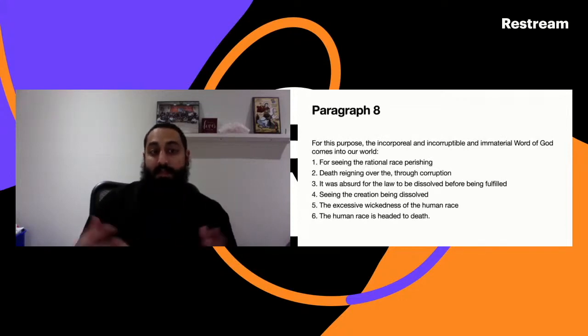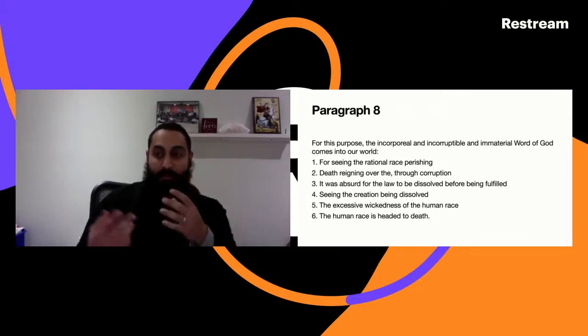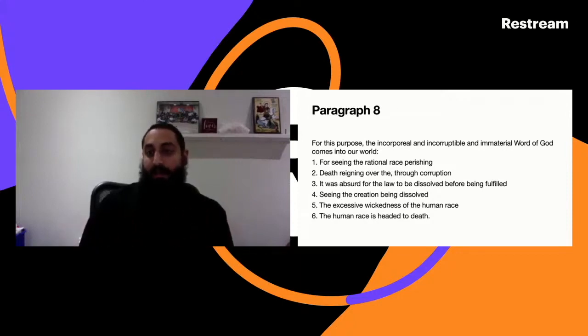Now in paragraph eight he sums up. He says for this purpose, the incorporeal, incorruptible, immaterial Word of God comes into our world. Once again, it's important - the three adjectives that St. Athanasius uses to describe God: incorporeal, meaning without a body; incorruptible, cannot be corrupted or uncorrupted; and immaterial, not in a form of a material, not bound, not limited by a material. Now this God with all these adjectives - without a body, incorruptible, without a form - now He has to come to the world and obviously in a form of a body.